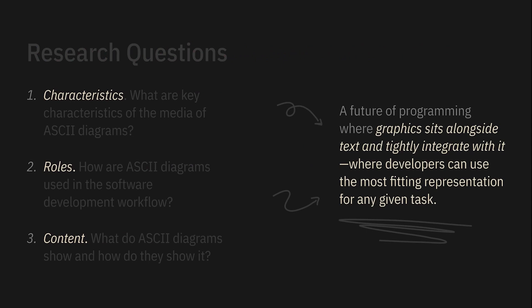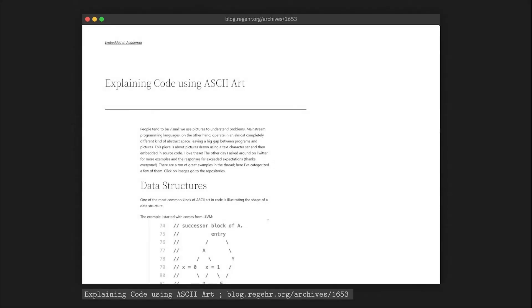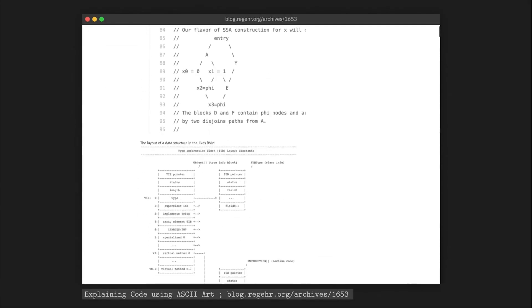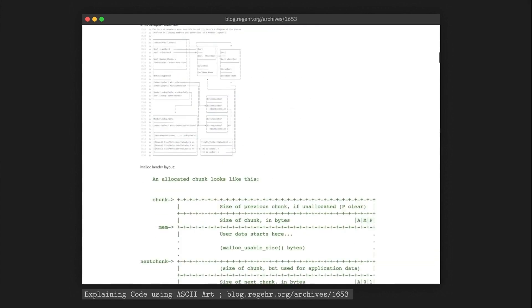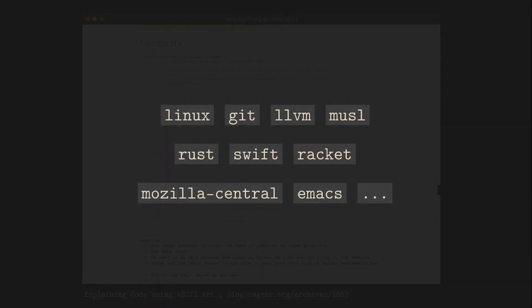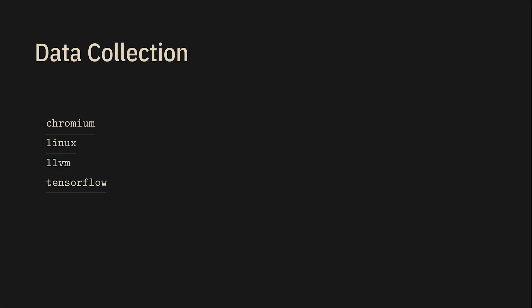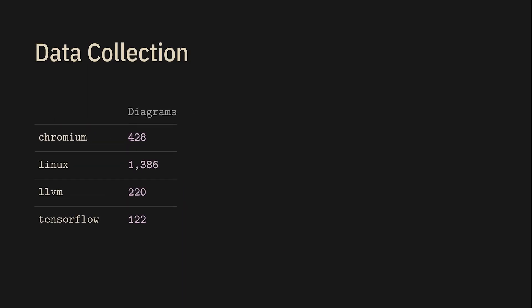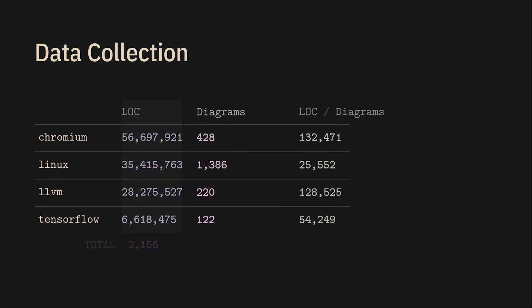To begin to answer any of these questions, we first need a bunch of these diagrams to study. We have some anecdotes to go off of, and in particular there is a wonderful blog post by Professor Rieger where he's collected a handful of them from different code bases. Inspired by this, I got the source code for big projects like the Linux kernel, LLVM, Chromium, and TensorFlow, and looked through the comments that might resemble an ASCII diagram. I was able to collect more than enough of a sample for study, although these diagrams were fairly rare.